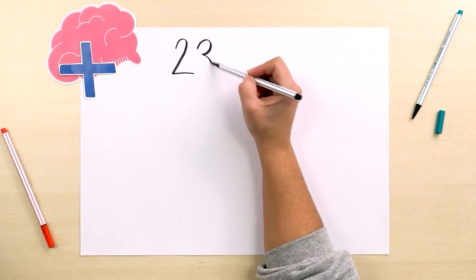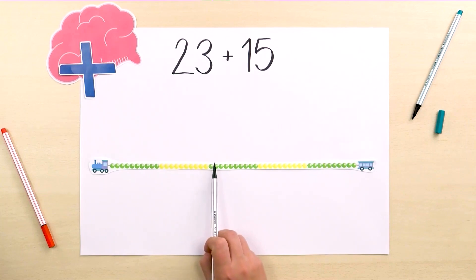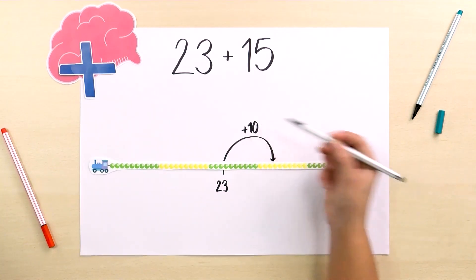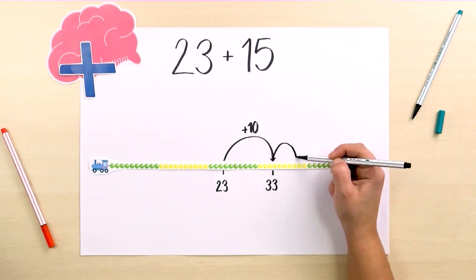Let's look at an addition using bigger numbers, 23 plus 15. Now we can use a 50 bead necklace. We go to number 23 and make a jump forward of 10 to get to 33, and then a jump of 5 to get to 38.